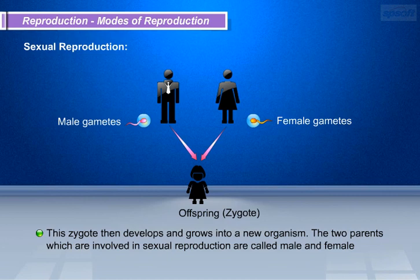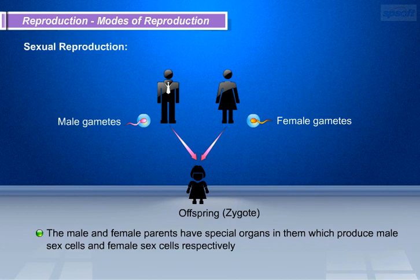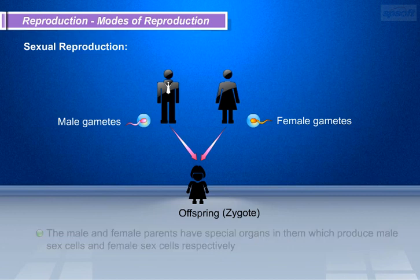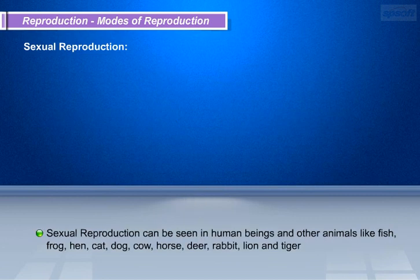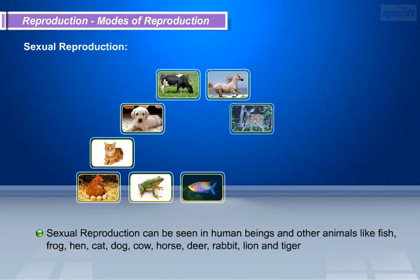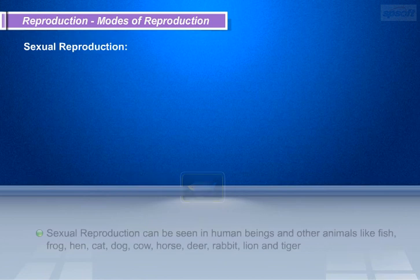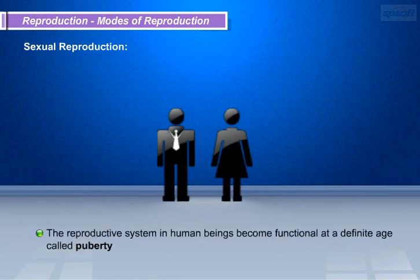This zygote then develops and grows into a new organism. The two parents involved in sexual reproduction are called male and female. The male and female parents have special organs which produce male sex cells and female sex cells respectively. Sexual reproduction can be seen in human beings and other animals like fish, frog, hen, cat, dog, cow, horse, deer, rabbit, lion, and tiger. The reproductive system in human beings becomes functional at a definite age called puberty.